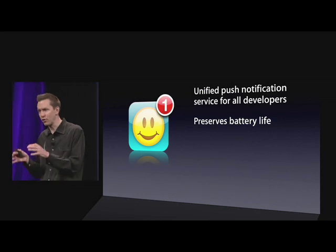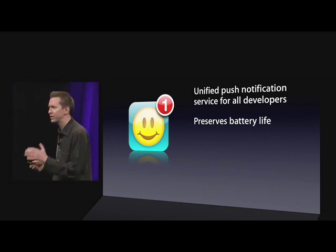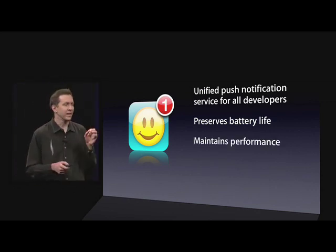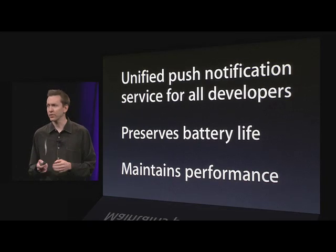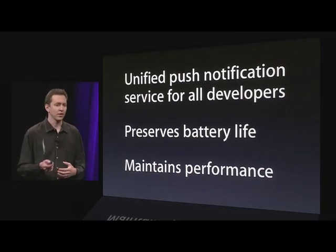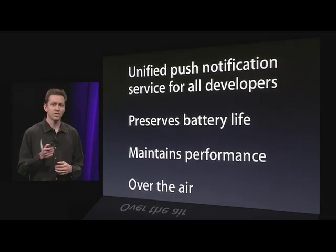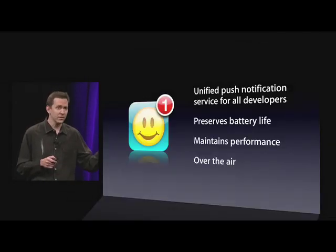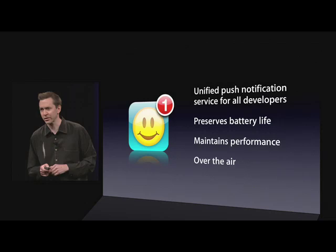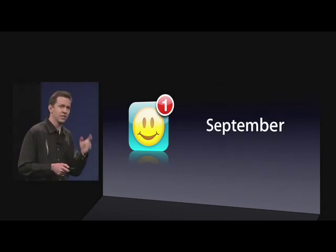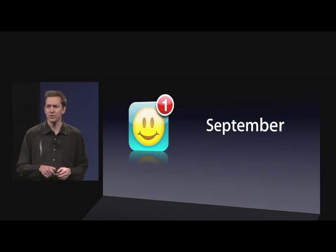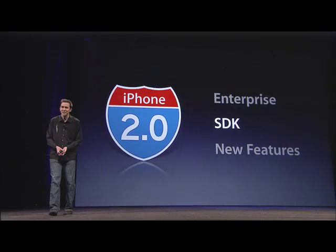It preserves battery life — there aren't background processes draining your battery. It maintains performance — there aren't background processes chewing up your CPU cycles. And it all works over the air, over the Wi-Fi network and the cellular network. This will be available in September, but starting next month we're going to be seeding developers so you can get your hands on it early. And that has been an update on the SDK. Thank you.